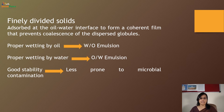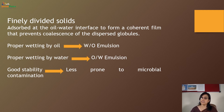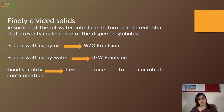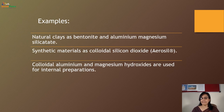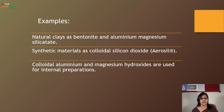Finely divided solids: excess emulsifying agents absorbed at the oil-water interface form a coherent film that prevents the coalescence of the dispersed globules. If there is proper wetting by oil, it will form a water-in-oil emulsion; if there is proper wetting by water, it will form an oil-in-water emulsion. They provide good stability and are less prone to microbial contamination. Examples include natural clays such as bentonite, aluminum magnesium silicate, synthetic materials such as colloidal silicon dioxide (Aerosil), and colloidal aluminum and magnesium hydroxides for internal preparations.